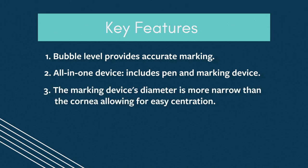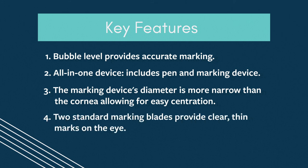The marking device itself here has a narrower diameter than the cornea which allows for easy centration and it has two blades where you apply the ink. These are fairly standard similar to the regular metal devices that are used and it provides a nice thin marking line on the eye.